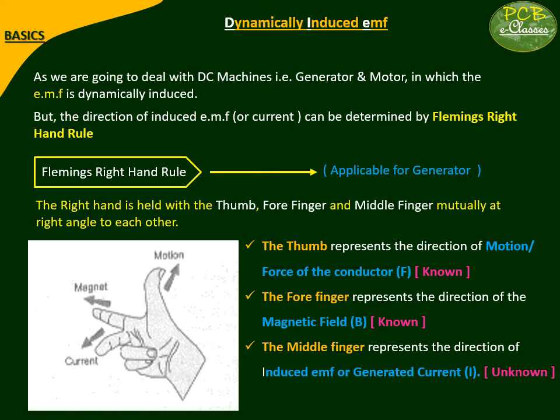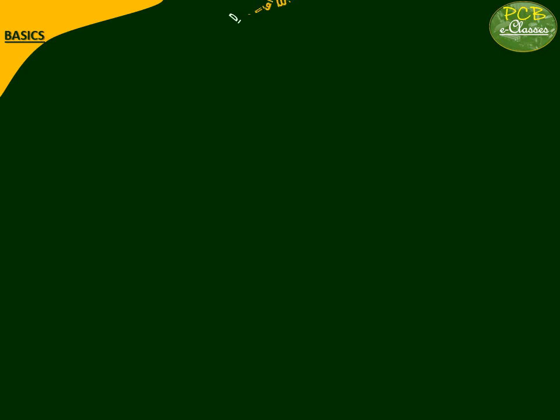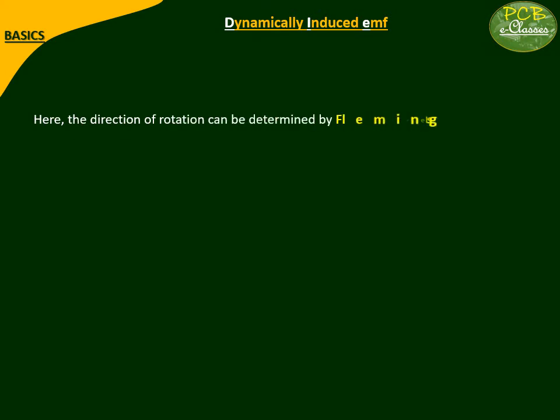By applying Fleming's Right Hand Rule, we can find out the direction of the induced EMF or generated current. Similarly, in a motor, electrical energy is converted to mechanical energy, which means the direction of current flowing in the conductor is known to us, as well as the direction of the magnetic field. But the direction of motion or force of the conductor is unknown to us — in which direction the motor or the conductors will be rotating is unknown. This is given by Fleming's Left Hand Rule.